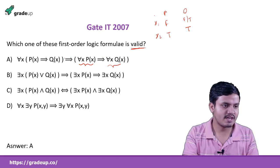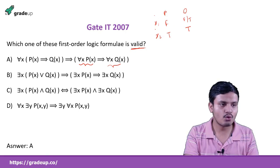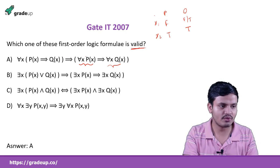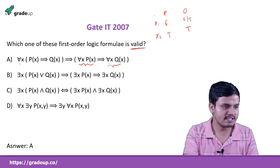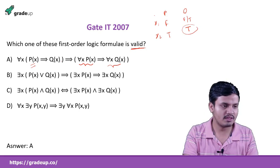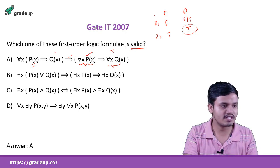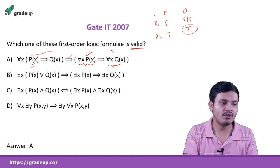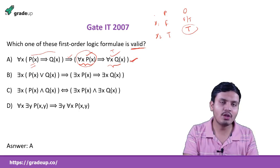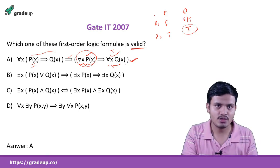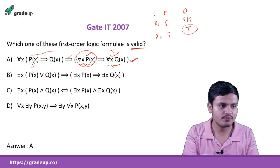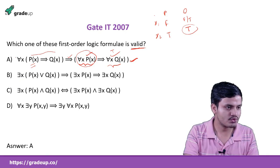To understand option A: I restrict the domain to x1 and x2. The antecedent says whenever P(x) is true, Q(x) must be true. So if for all x, P(x) is true, then for all x, Q(x) must also be true — because the premise guarantees it. So option A is confirmed valid. Another way is to use concrete statements to verify this logically.